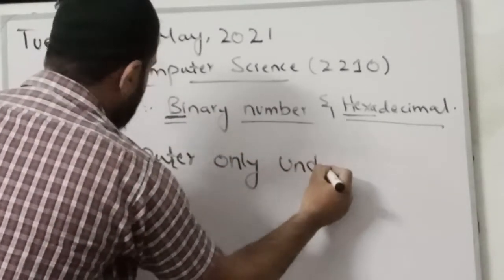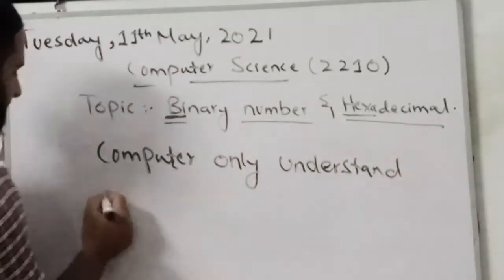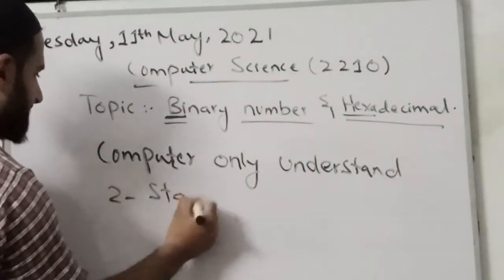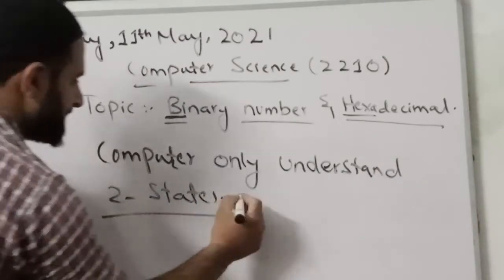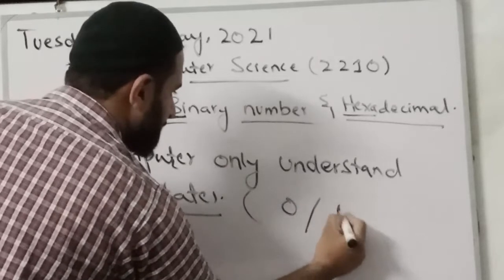Computer only understands binary numbers, zero and one, on and off. Computer only understands binary numbers. These two states, one is zero slash one.